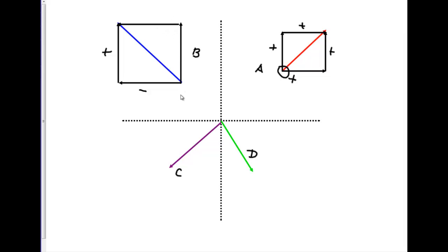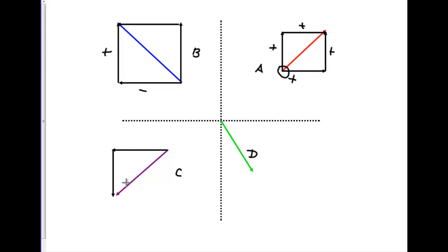Let's look at vector c. I pull it out and start at tail tail. I do my x — in this example I'll have a negative x — then I do my y. In this example I will have a negative x and a negative y. If you do the y direction first, you'd get a negative y and then a negative x.